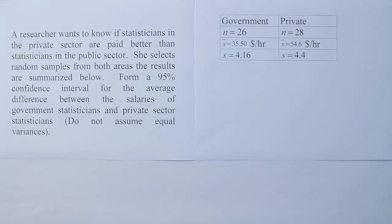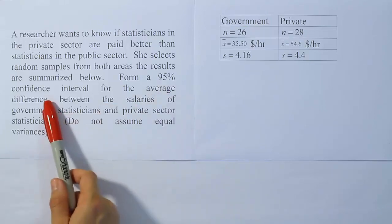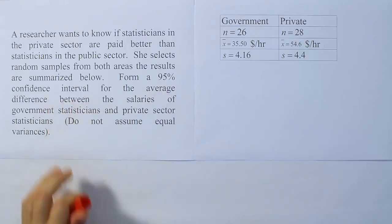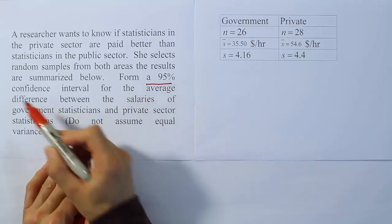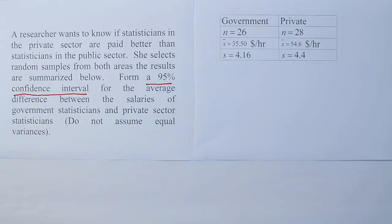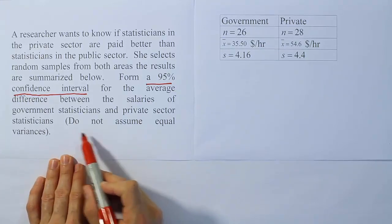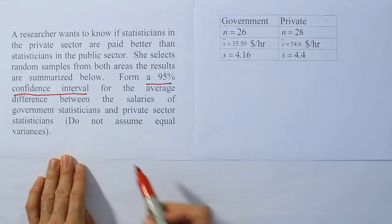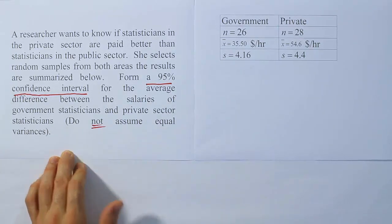A researcher wants to know if statisticians in the private sector are better paid than statisticians in the public sector. She selects random samples from both areas. The results are summarized below. Form a 95% confidence interval. So there's our key phrase right there. We know at that point we're working with a confidence interval for the average difference between salaries. Then we have this important bit of knowledge here: do not assume equal variances.